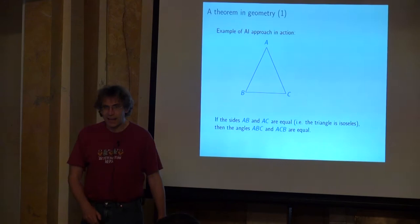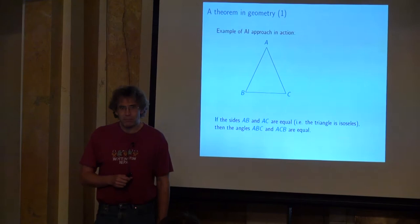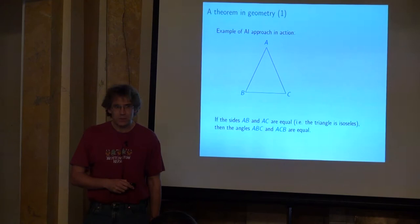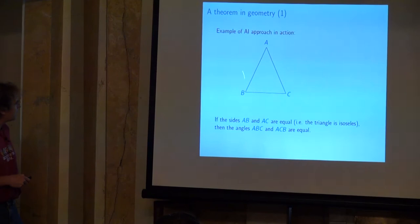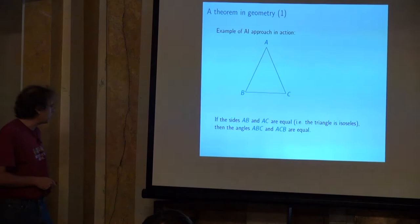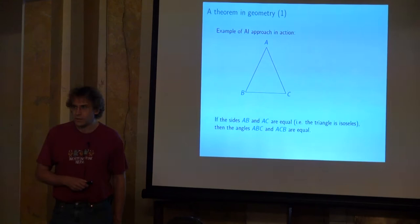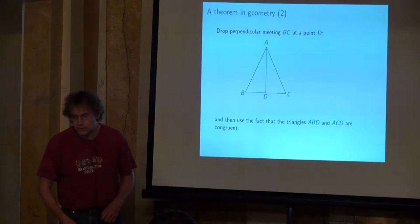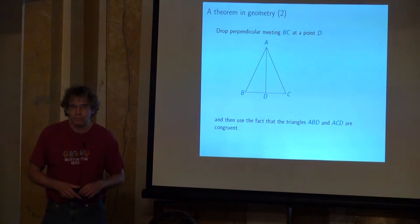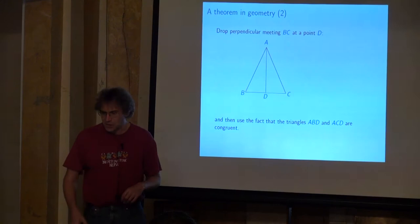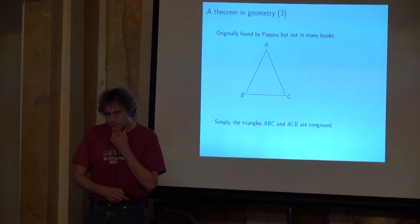Here's a very early example of the AI approach, done right at the dawn of the computing era by hand-executing an algorithm. It's a simple geometry problem: given an isosceles triangle where AB equals AC, prove that the two base angles are equal. Most US high school geometry textbooks drop a perpendicular first and then use congruent triangle identities, but when this hand-executed geometry algorithm was run, it actually found a much simpler proof.